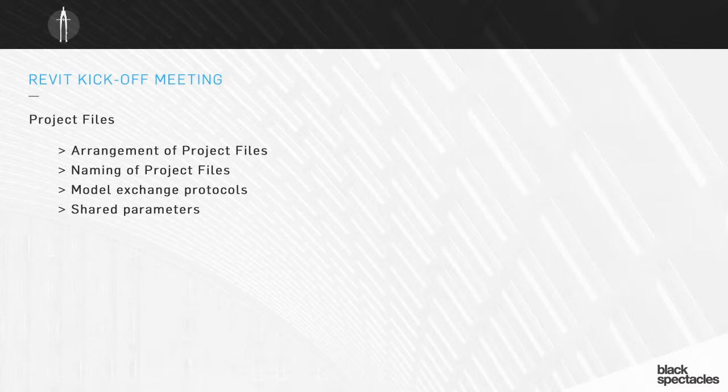You have to talk about naming of the project files, keeping naming consistent across all files. You also want to establish model exchange protocols — how are you going to exchange and coordinate models with other project team members? Are you going to exchange models the old-fashioned way, FTP-ing them once a week? Or are you going to use an automated system through Autodesk Buzzsaw or a program like NuForma that automatically exchanges models in the background overnight, so you always have fresh linked models and everyone is always up to date?